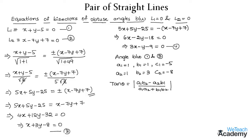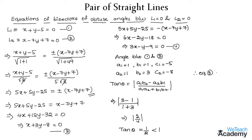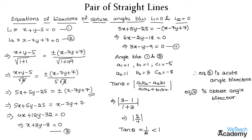Substituting the values: a1·b2 = 1×3 = 3, a2·b1 = 1×1 = 1, a1·a2 = 1×1 = 1, b1·b2 = 1×3 = 3. This gives tan θ = |3 − 1| / (1 + 3) = 2/4 = 1/2. Since tan θ is less than 1, equation 3 is the acute angle bisector. Therefore equation 4, which is 3x − y − 9 = 0, is the obtuse angle bisector — which is the answer we need.